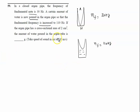The organ pipe has a cross-sectional area of 2 cm², which is 2×10⁻⁴ m². We have to calculate the mass of the water in grams.